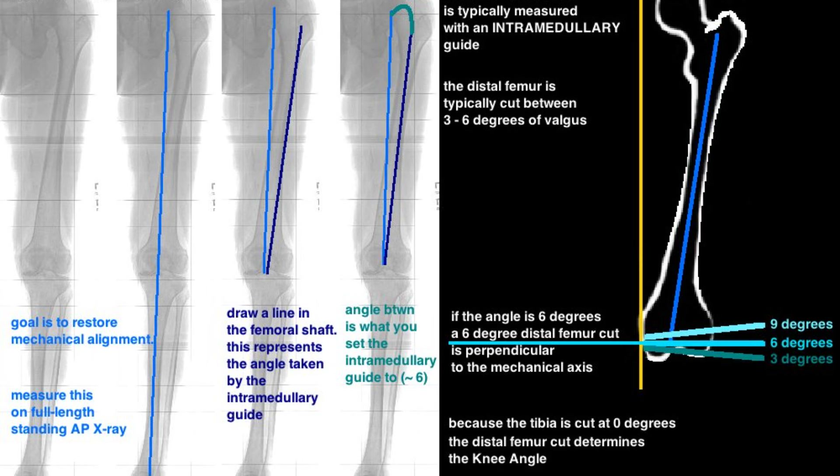The goal is to place the TKA in neutral mechanical alignment. The knee is typically in neutral mechanical alignment when the tibio-femoral angle is 6 degrees valgus. The tibia is cut at 0 degrees relative to both the mechanical axis and the anatomic axis, as they are parallel. The femur is classically cut using an intramedullary referencing system guided by the medullary canal, which corresponds to the anatomic axis. The difference between the anatomic and mechanical axis is about 6 degrees, and the guide is commonly set to that value. Exact measurements should be calculated preoperatively as part of templating.